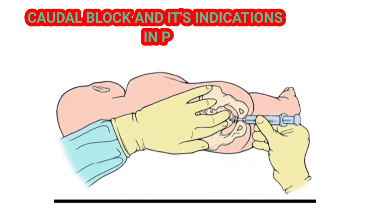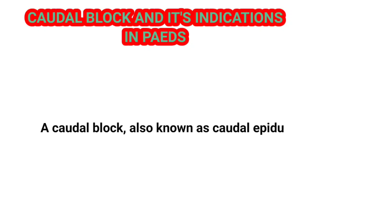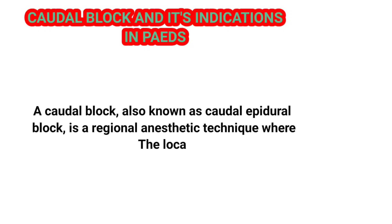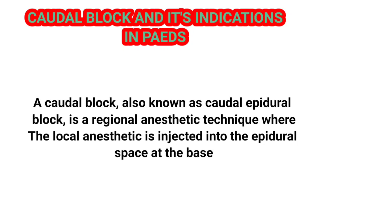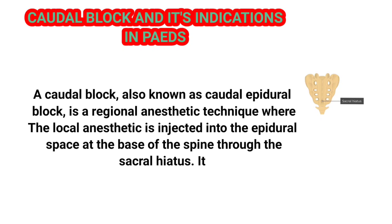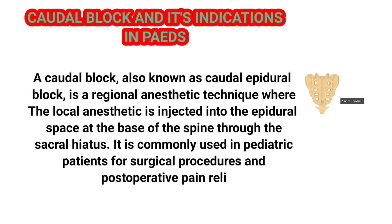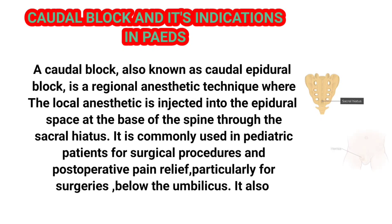Caudal block and its indications in pediatrics. A caudal block, also known as caudal epidural block, is a regional anesthetic technique where the local anesthetic is injected into the epidural space at the base of the spine through the sacral hiatus. It is commonly used in pediatric patients for surgical procedures and postoperative pain relief, particularly for surgeries below the umbilicus.